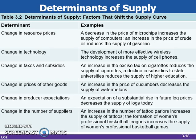If the price of resources or inputs for a good goes up, supply decreases. If resource prices go down, this improves the firm's profit margin, so supply increases.